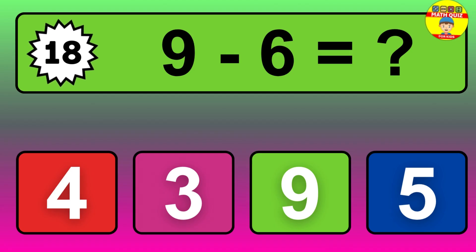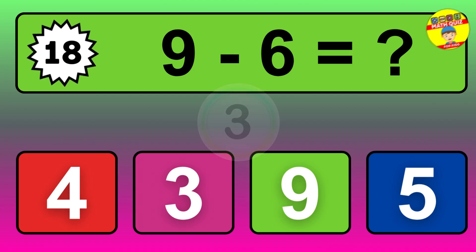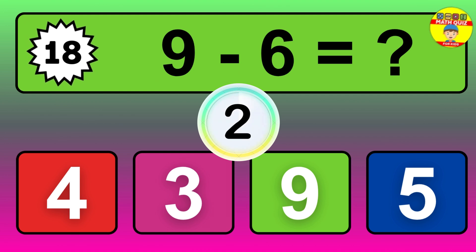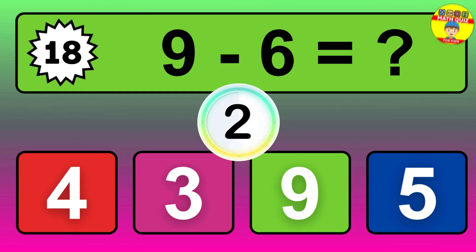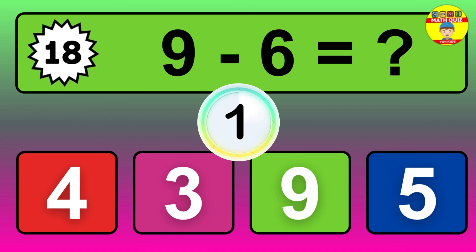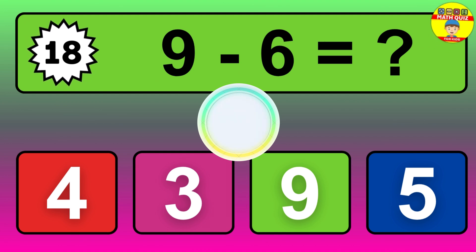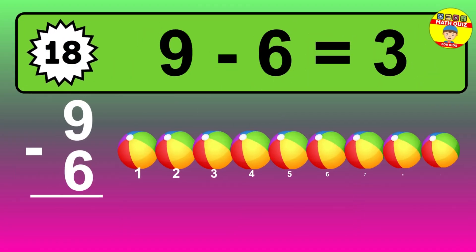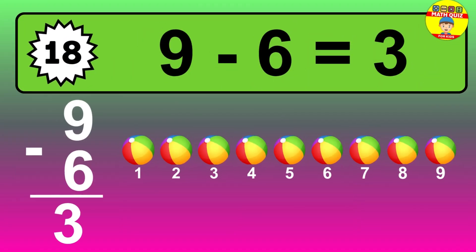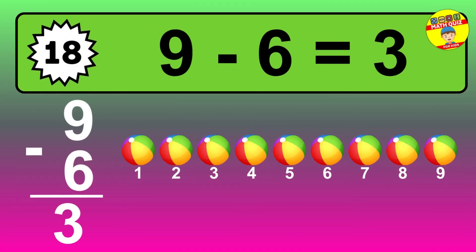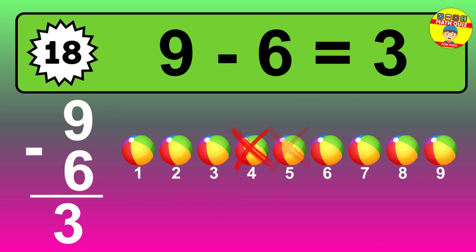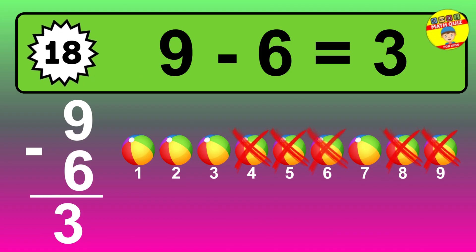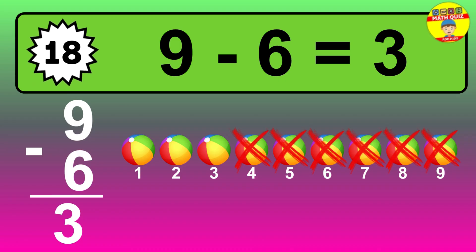Question 18. 9 minus 6 equals what? The answer is 9 minus 6 is 3. Let's count it: 1, 2, 3.